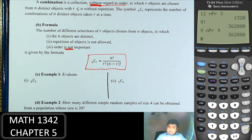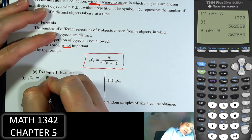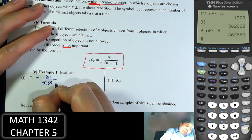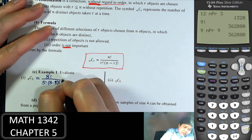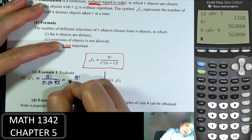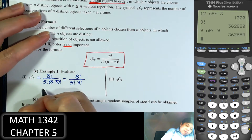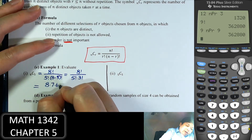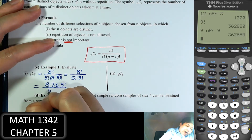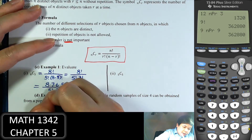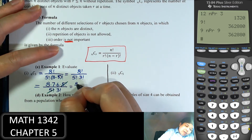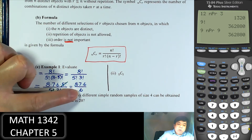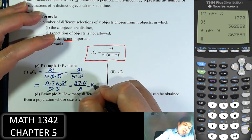Let's do 8C3 by hand. According to the formula: 8 factorial over 3 factorial times (8 minus 3) factorial, which is 8 factorial over 3 factorial times 5 factorial. Rewrite 8 factorial as 8 times 7 times 6 times 5 factorial, over 5 factorial times 3 factorial. The 5 factorials cancel. Then 3 factorial is 6, which cancels with the 6, leaving 8 times 7, which is 56.